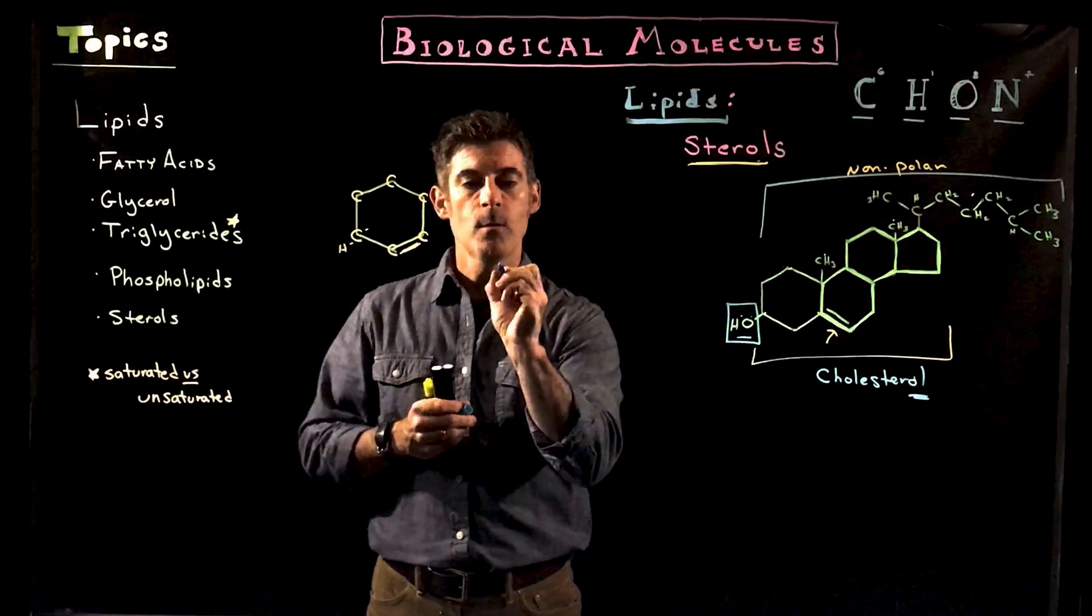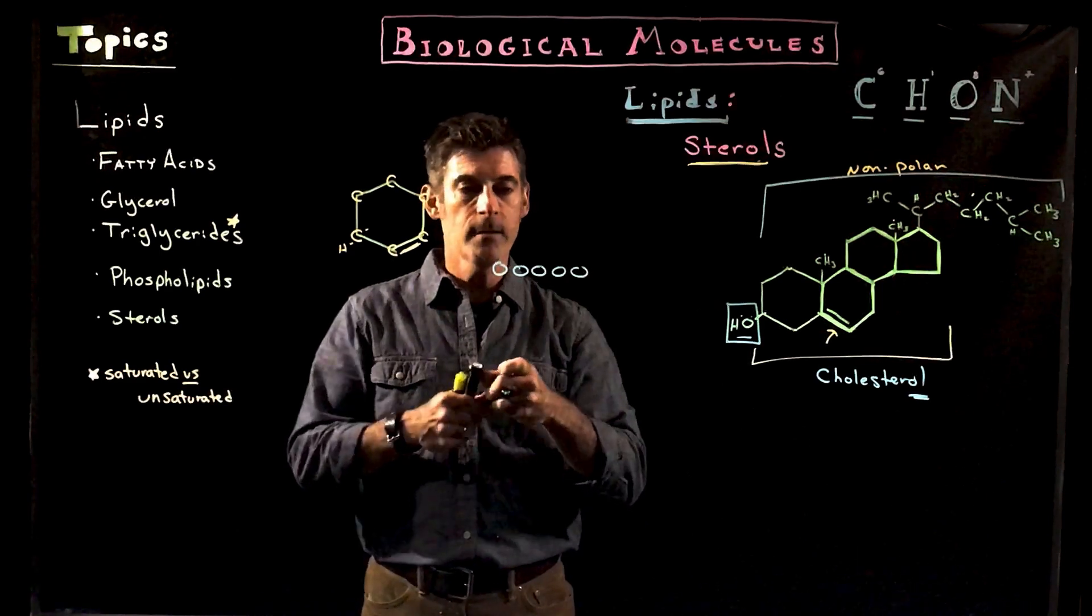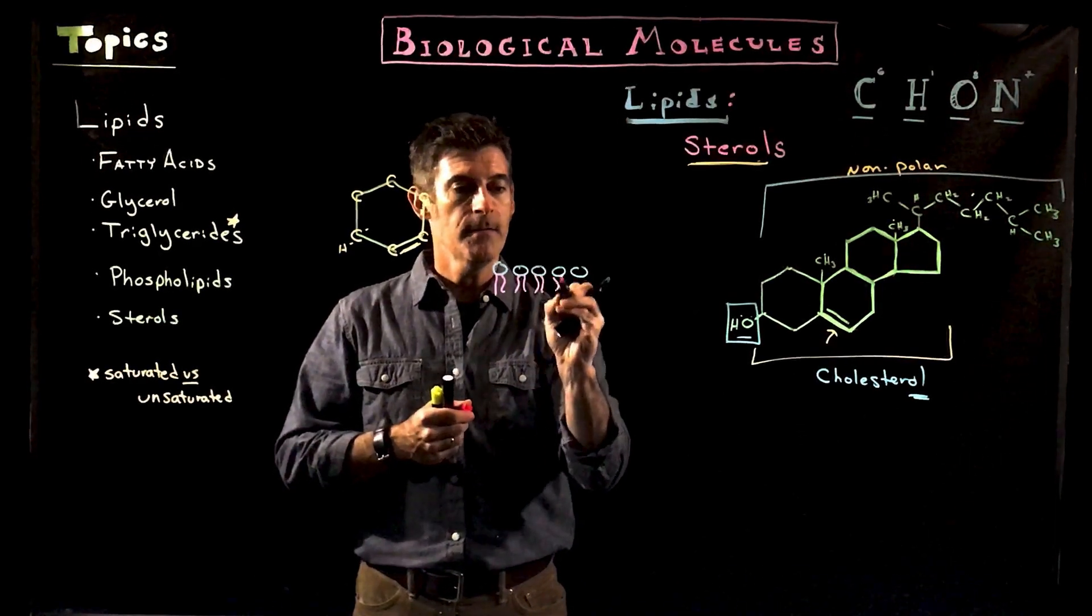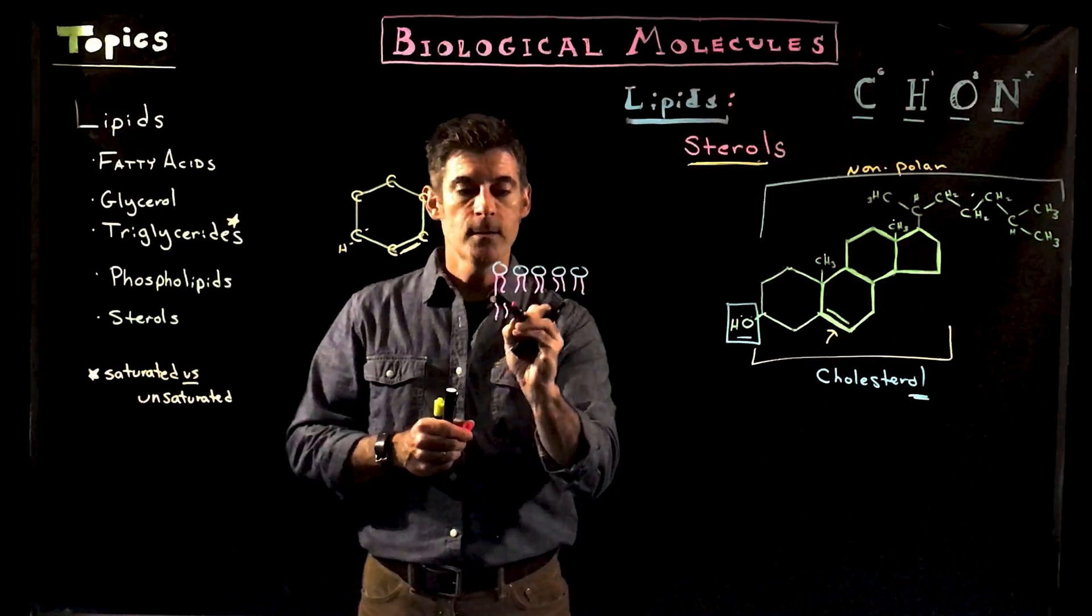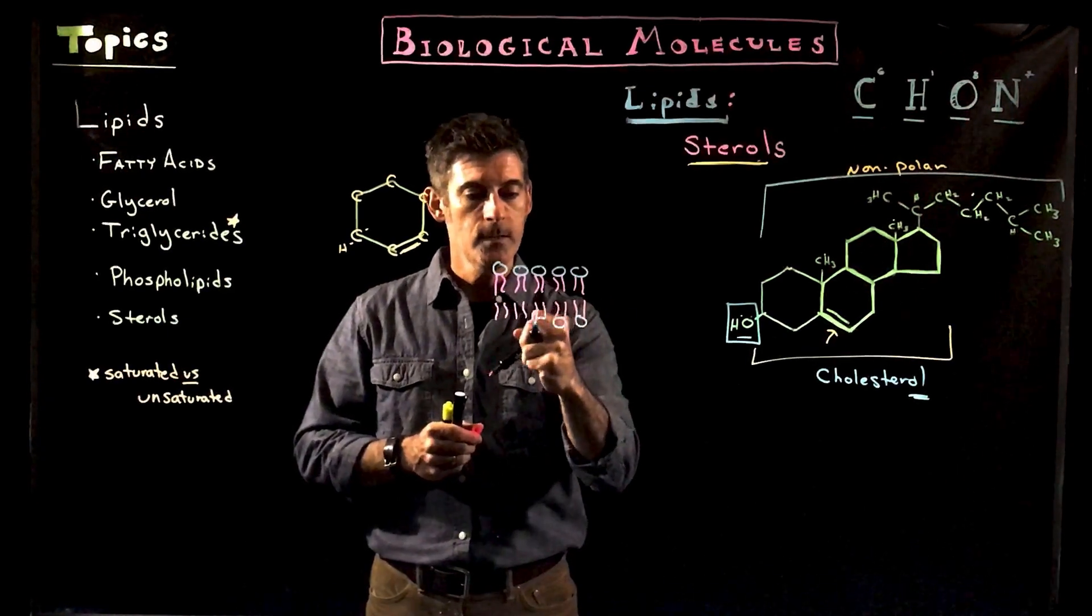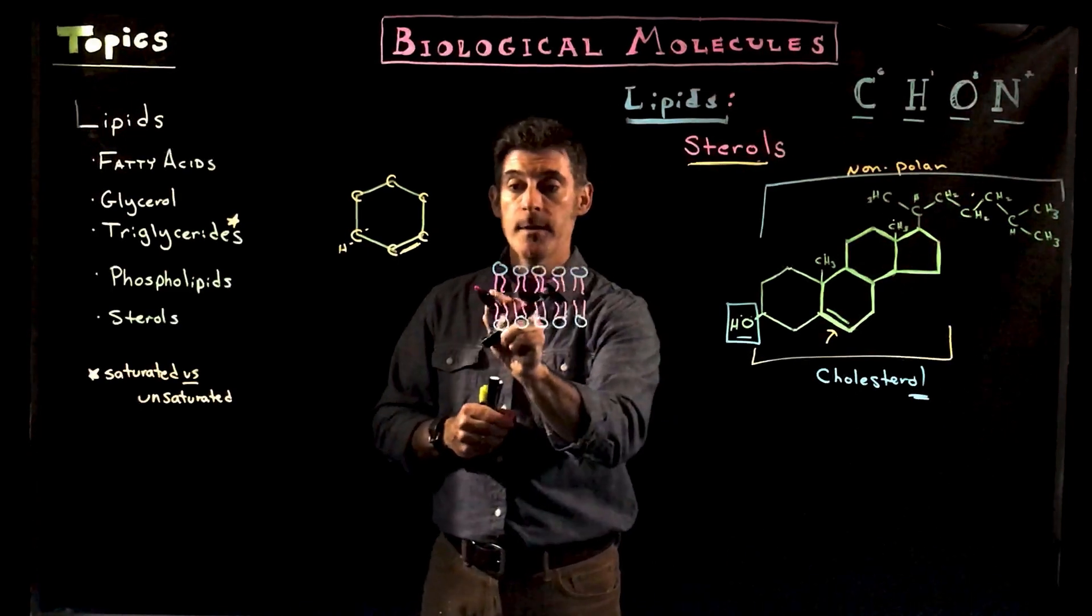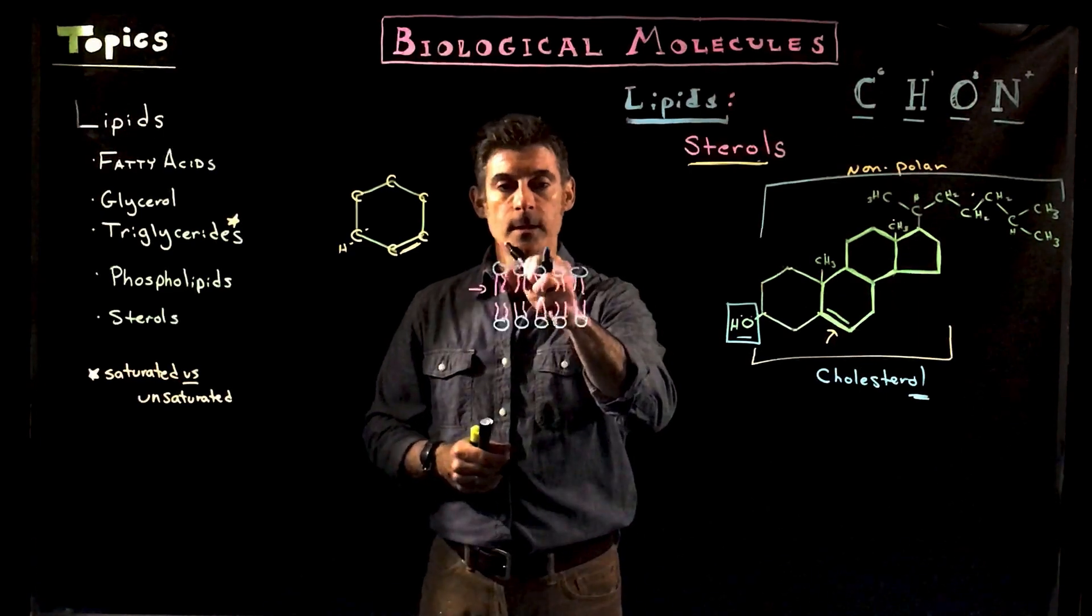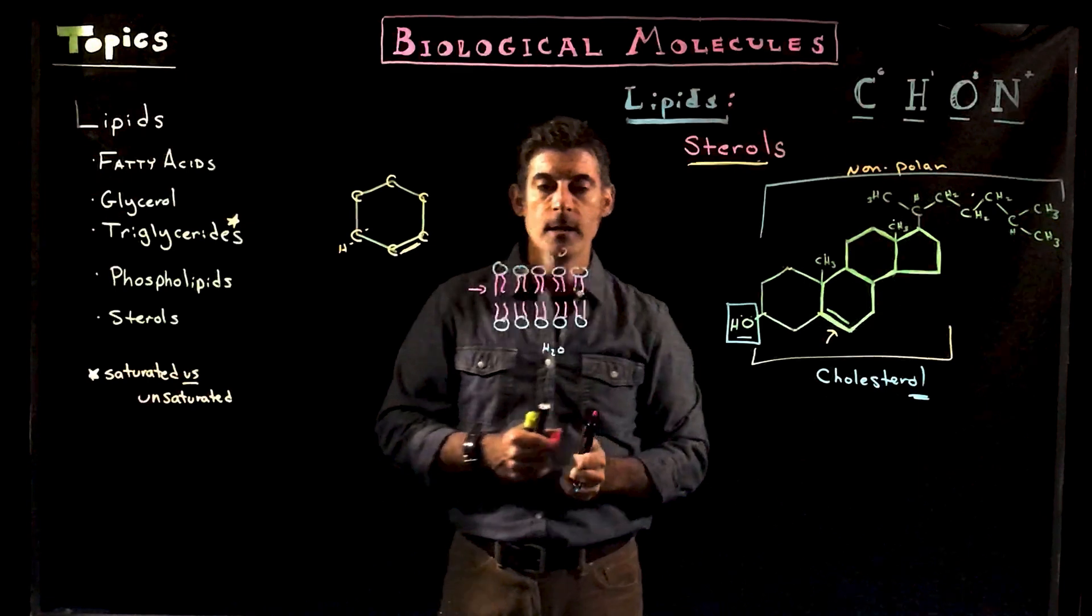But when we start to draw what's to come, and we put together cell membranes, what we're going to have are little things you might recognize like this, as our phospholipids. Membranes are going to end up with bilayers. So you're going to have two layers of phospholipids, where the tails, which don't like water, are oriented toward one another, and the areas that do like water, are to the inside and the outside of the cell.